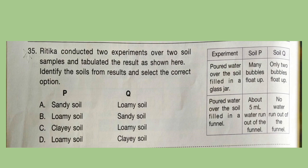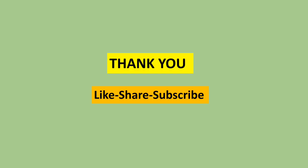Question 35: Hrithika conducted two experiments over two soil samples and tabulated the results. Identify the soils from the results and select the correct option. Look at the table carefully and try to find out P and Q. Correct answer is option D — P is loamy soil and Q is clay soil. Thank you for watching this video. New users, please subscribe our channel Olympiad Trainer for more such question papers. Don't forget to hit the like button if you find the video useful and share it with your friends too.